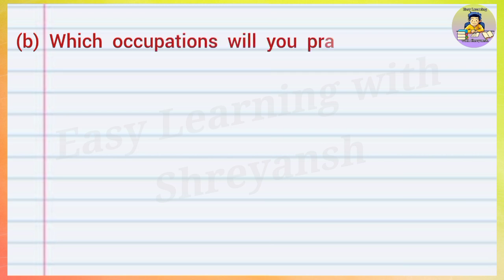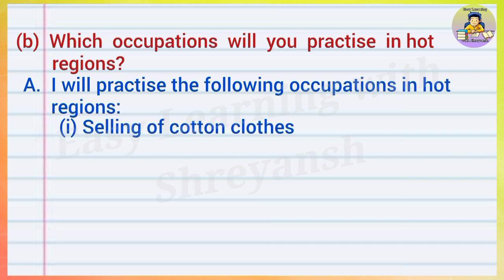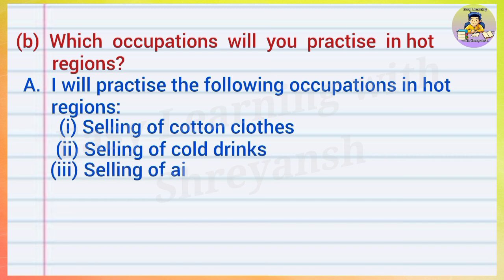(b) Which occupations will you practice in hot regions? Answer: I will practice the following occupations in hot regions: selling of cotton clothes, selling of cold drinks, selling of air conditioners, air coolers, and fans.